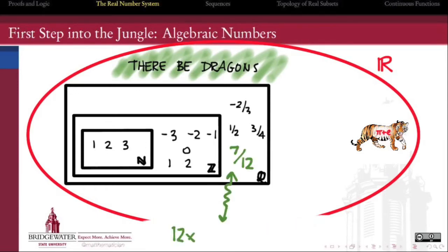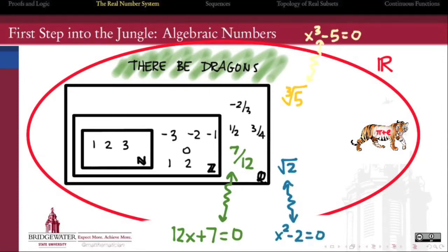If we think of a rational number like 7 twelfths as being the solution of the degree 1 equation 12x minus 7 equals 0, then if we push that a little bit, what about the solutions to degree 2 equations, like x squared minus 2 equals 0, or degree 3 equations?